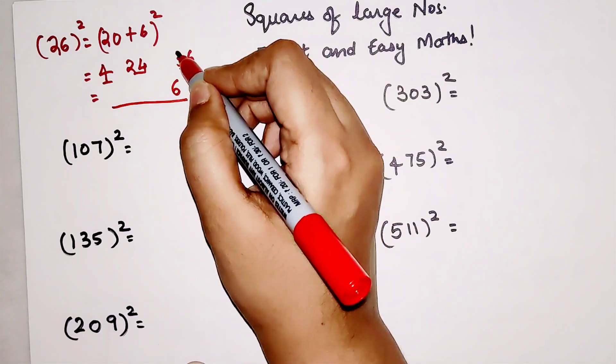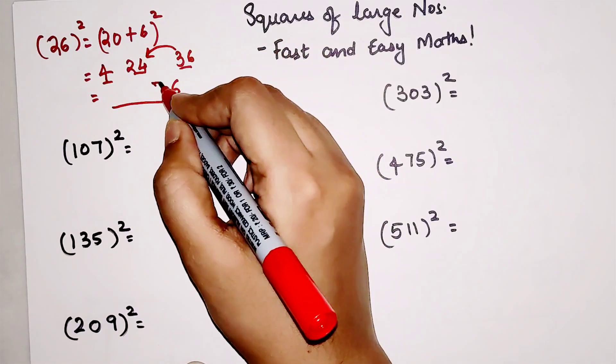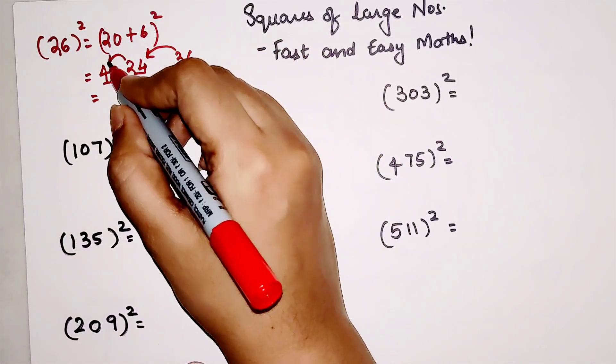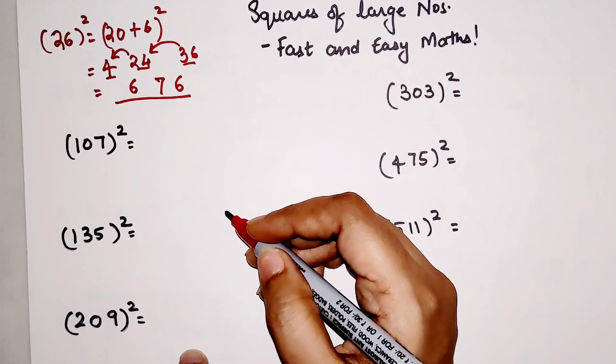So your final answer will have 6 over here. What happens to this 3? It gets added to 24. So 24 plus 3 gets you 27. And this 2 gets added over here. So 2 plus 4 gets you 6. That is how you are going to get your answer.